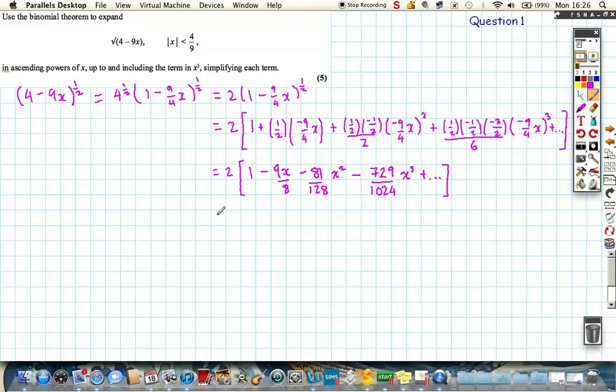And then the final step, we just need to multiply out by our factor of 2. I'm using approximately equals because I'm just going to include up to the x cubed terms. So I get 2 minus 9 over 4x minus 81 over 64x squared minus 729 over 512x cubed. I've used approximately equals because I've not carried it on, I've just included the first terms. There are other terms, but we're not interested in those.